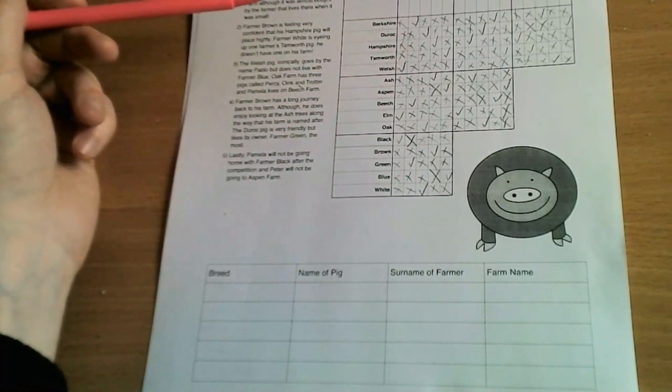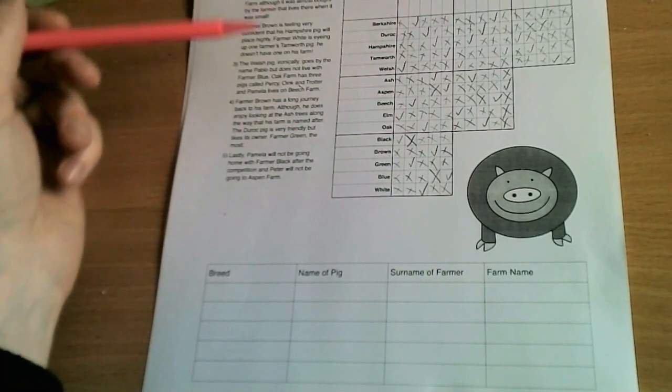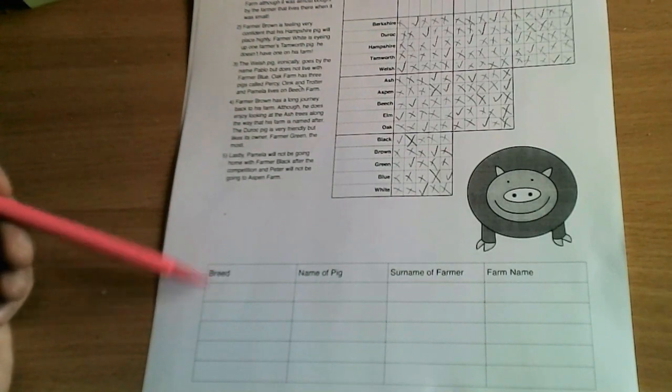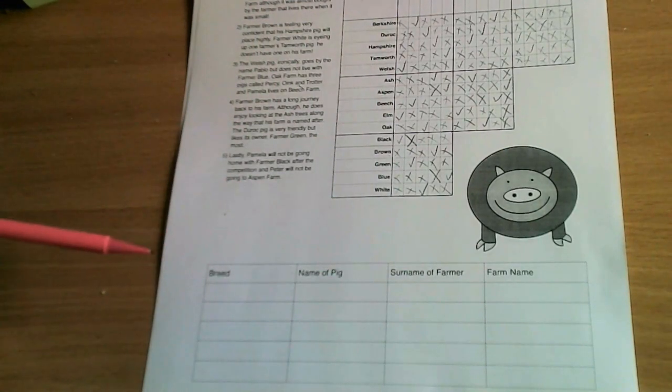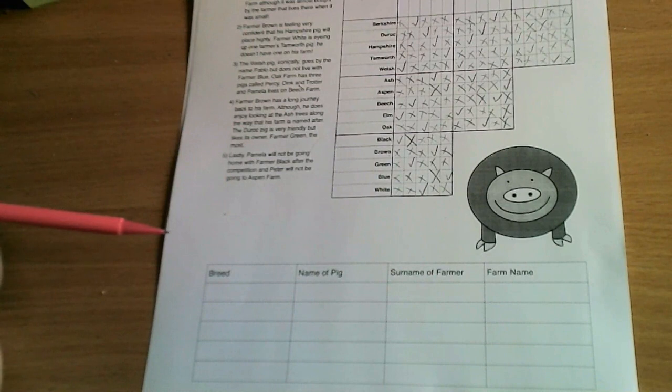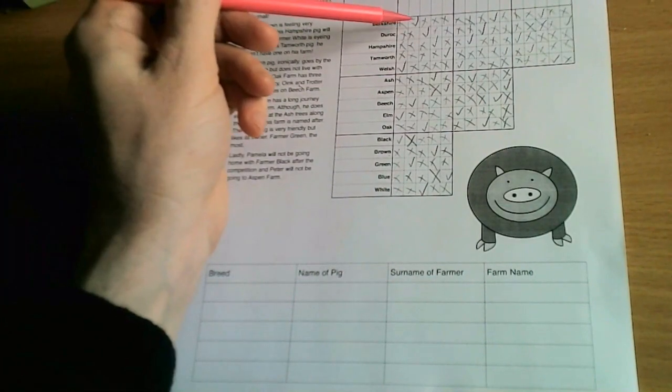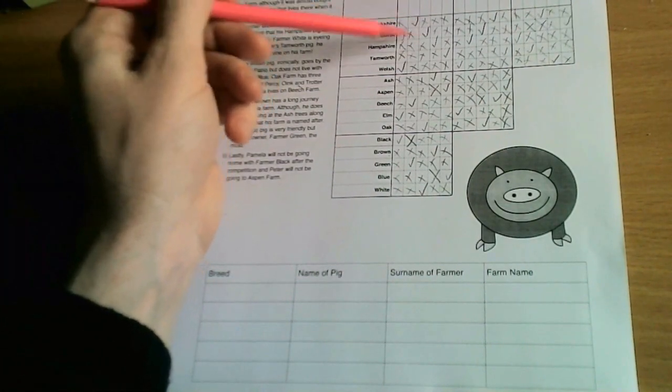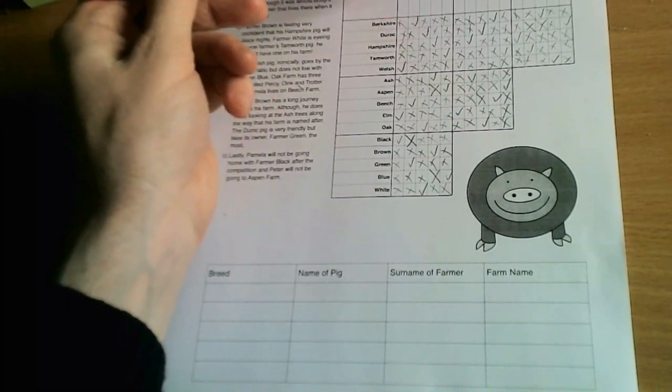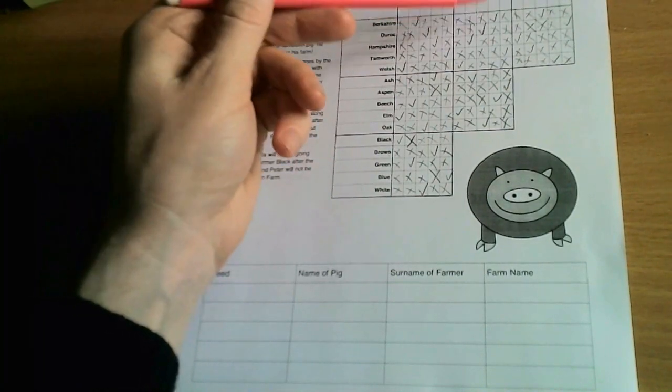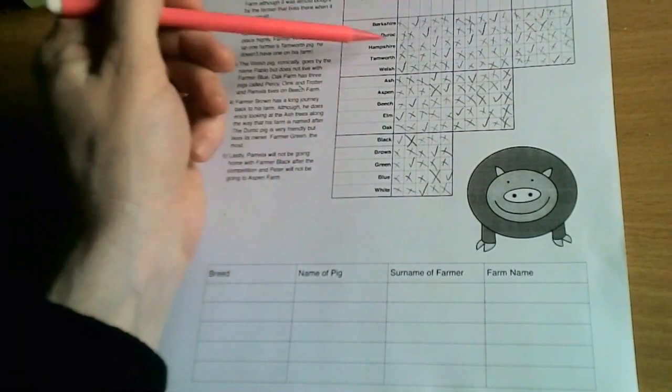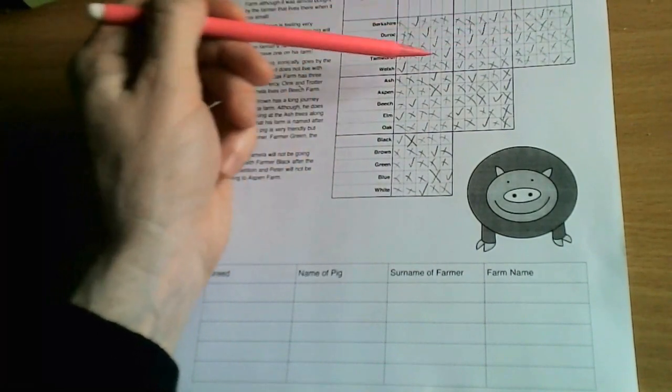Then we can go through and gradually whittle down the answers to the puzzle. Now sometimes these puzzles also have a table at the bottom which can be used to summarize information, and what you should have at the end is one tick and four crosses in this particular instance in each of the boxes for each line, so you can go through and check that's the case.